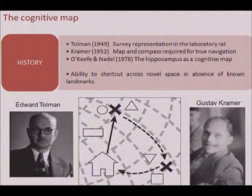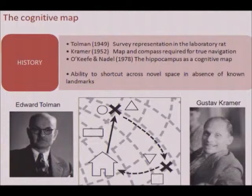This all became very exciting in 1971 when John O'Keefe discovered place cells in the hippocampus. O'Keefe and Nadel synthesized the data suggesting that the cognitive map was actually being encoded by the hippocampus, and the rest is history. The definition from an ethological point of view is the ability to shortcut across novel space in the absence of known landmarks. An animal that might navigate to one location of landmarks on one day might navigate to another location on another day — being placed there, it can make a direct vector from one area of landmarks to the other.